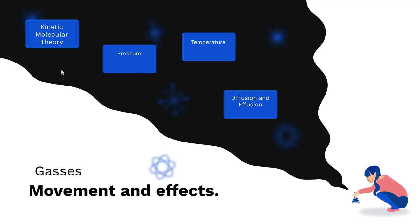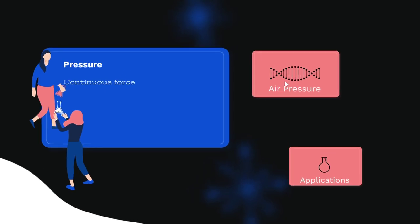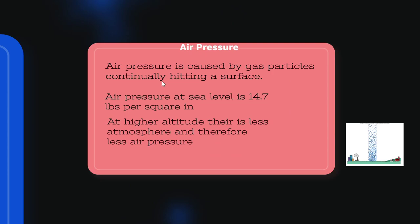Since we're talking about gas, we need to talk about pressure. Pressure is just a continuous force — you can grab your wrist and apply pressure, and as long as it's a continuous force, that's what pressure is. Air pressure is a continuous force of gases applying pressure to a particular thing, caused by gas particles continually hitting a surface. All the air pressure we feel right now is happening because gas molecules are hitting us at a certain velocity and speed.